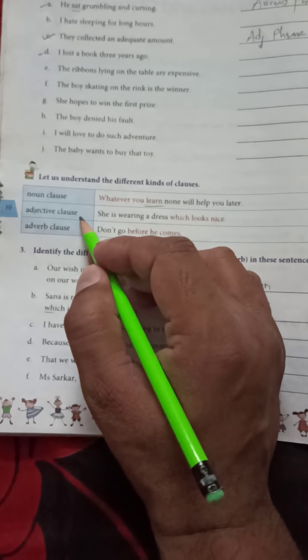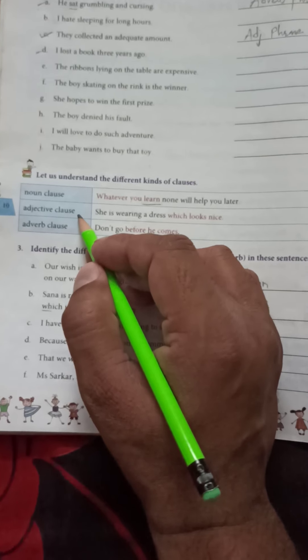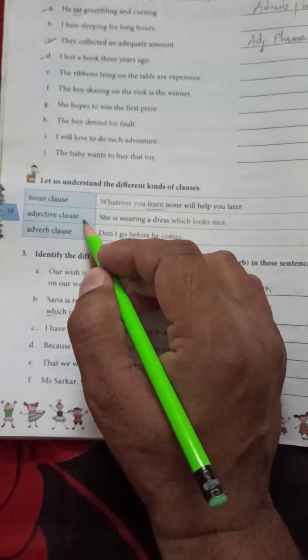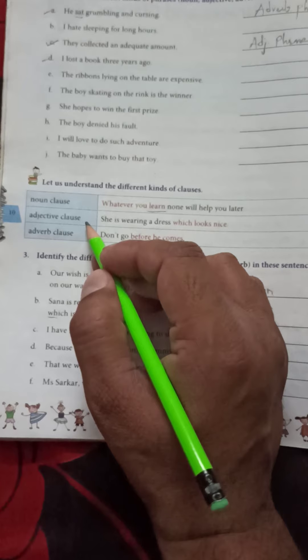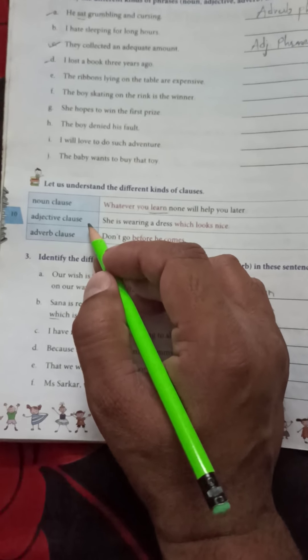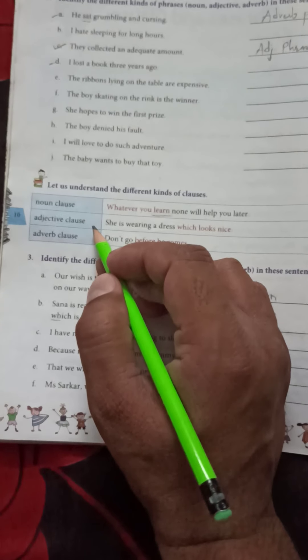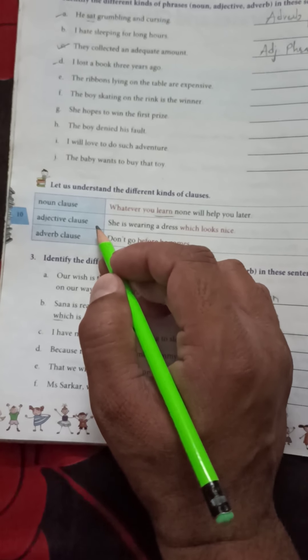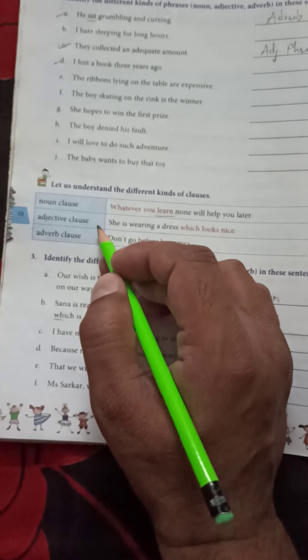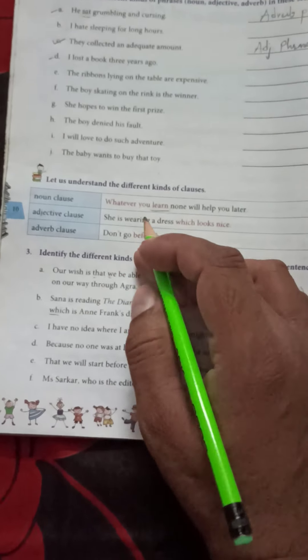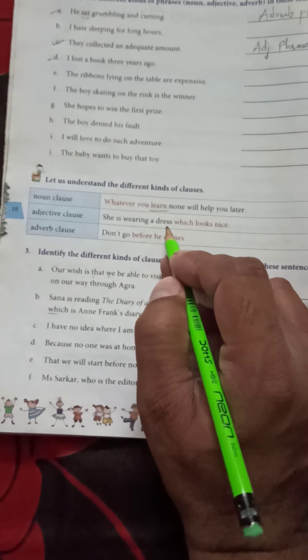Adjective clause. Adjective clause means the clause in a sentence that gives us the meaning as an adjective and is placed just after the noun or pronoun they describe or qualify is called an adjective clause. Example: she is wearing a dress.